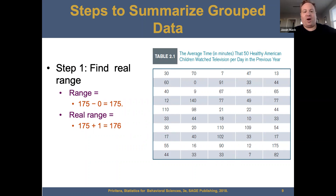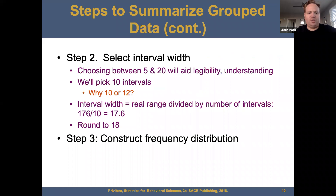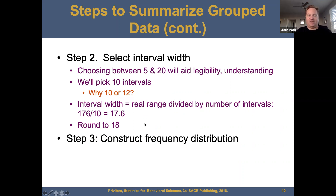So some steps to summarize grouped data. The average time in minutes that 50 healthy American children watched television per day in the previous year is what we're looking at. We want to select the interval width — choosing between 5 and 20 will aid in legibility. We'll pick 10 intervals. The interval width equals the real range divided by the number of intervals: 176 divided by 10 equals 17.6, which we round up to 18. Next, we construct our frequency distribution.